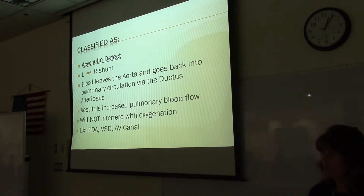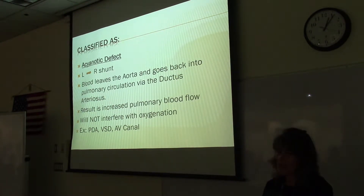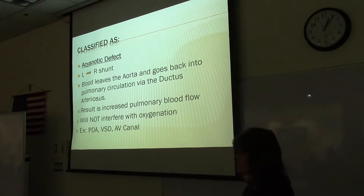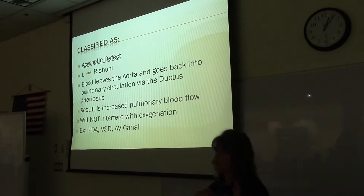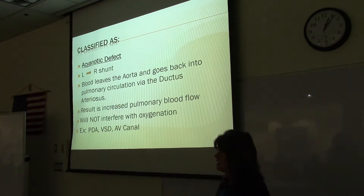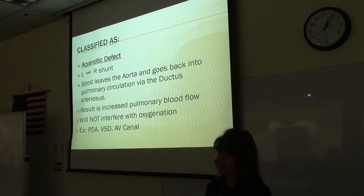We're going to have some categories to put all the heart defects into. One of the categories is deciding whether it's an acyanotic defect or a cyanotic defect. If the defect causes the blood to still become oxygenated by the lungs, then we have a defect, but we still have good oxygenation. So we would put it under the category of an acyanotic defect, meaning no cyanosis.